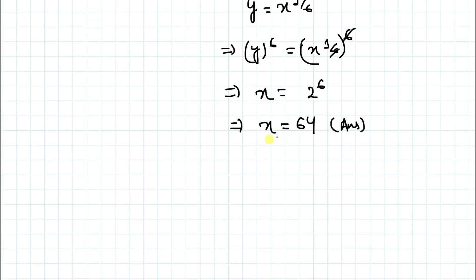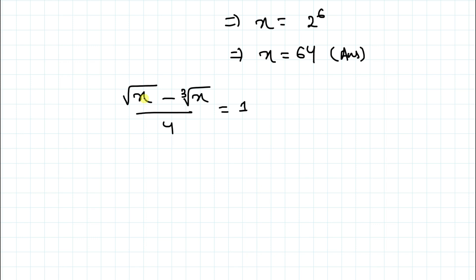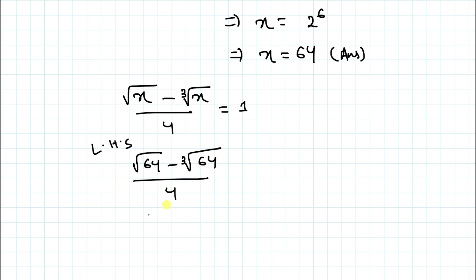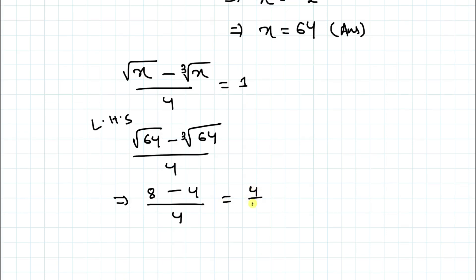Let's verify that x equals 64 satisfies the original equation: √x minus ∛x divided by 4 equals 1. Substituting: √64 minus ∛64 divided by 4 equals 8 minus 4 divided by 4, which equals 4 divided by 4, which equals 1, matching the right-hand side. Hence x equals 64 is confirmed.